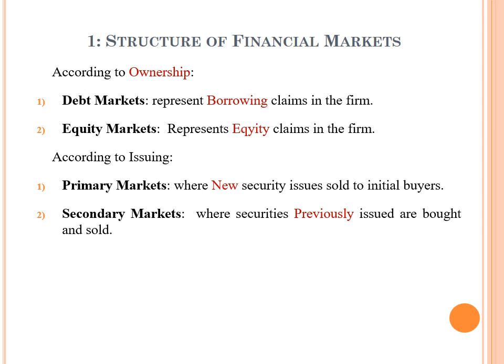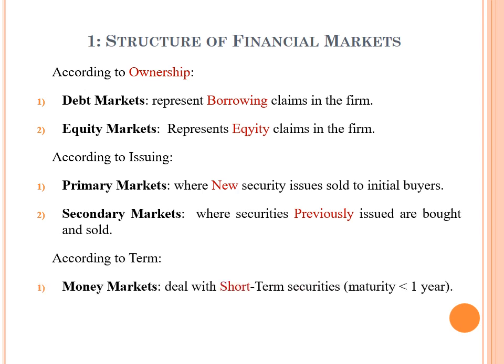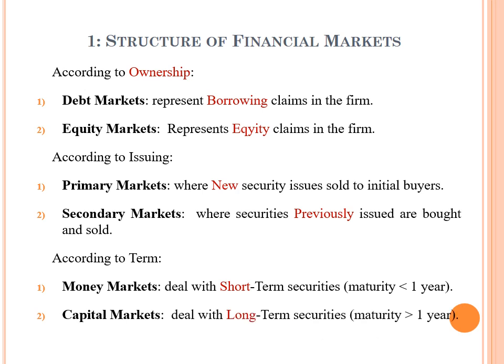According to ownership, according to issuing, and according to term: we have money markets, which deal with short-term securities where the maturity is less than one year, and capital markets, which deal with long-term securities where maturity is greater than one year.